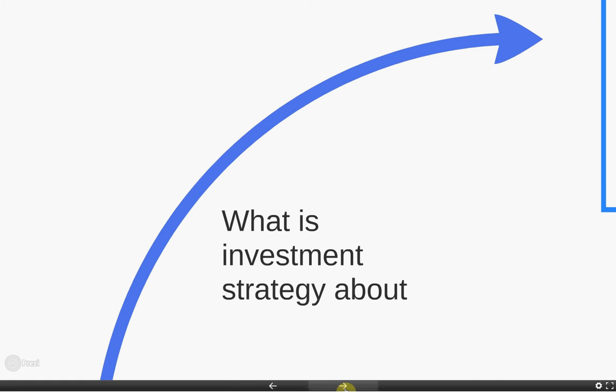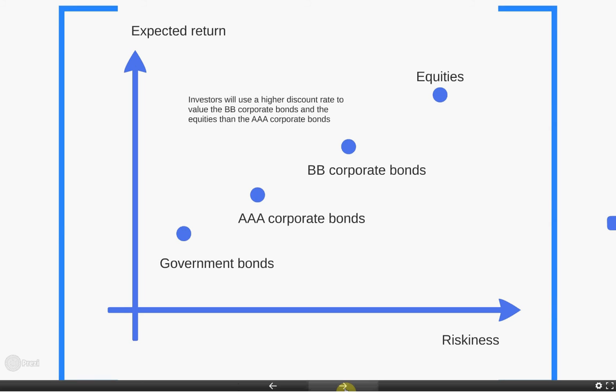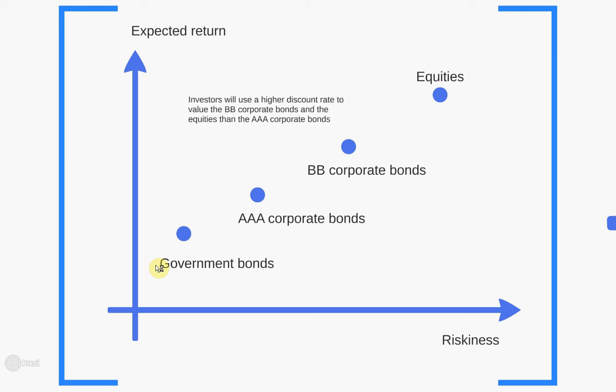Investment strategy is about balancing risk versus return. Some assets are very risky but expect to have a high return; other assets are much more secure but expect to have a lower return. Government bonds are at the bottom left of this graph because they're regarded as very low risk. The British government has never defaulted on a debt — there is some contention about whether Henry VIII's dissolution of the monasteries counts as a debt default, but certainly in modern times the British government has never defaulted. Therefore, British government debt is considered very, very secure, but the return on it is generally low.